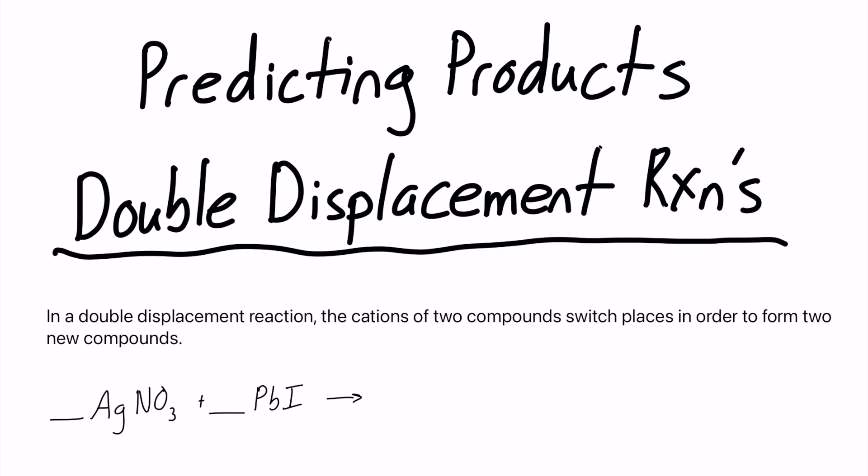So let's jump into it. In this video, we are going to do a quick lesson, take a look at something called the solubility chart, and then do a couple of examples of double displacement reactions. So to start, it says in a double displacement reaction, the cations of two compounds will switch places in order to form two new compounds.